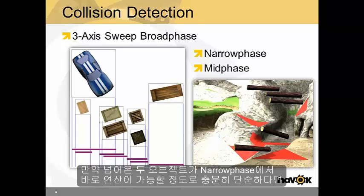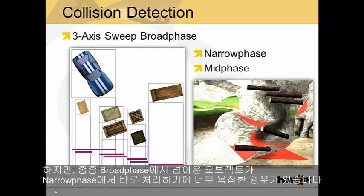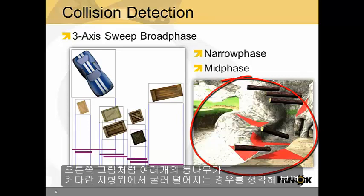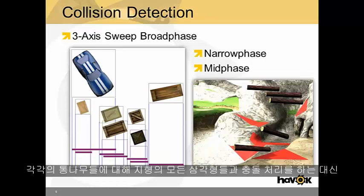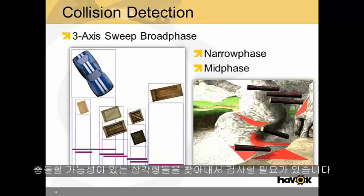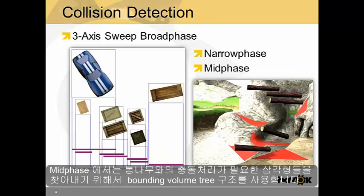If the two objects passed from the broad phase are sufficiently primitive, we simply pass them along to the algorithms which handle those two primitive shapes — for instance, box versus triangle. However, oftentimes the objects are more complicated. Consider logs falling on a landscape: the landscape is one large object in the world but has many triangles. Instead of colliding each log with all the triangles in the landscape, we identify candidate triangles for testing. This is where the mid-phase comes in. Havok provides an optimized mid-phase which uses a bounding volume tree to identify child triangles to collide with the logs.